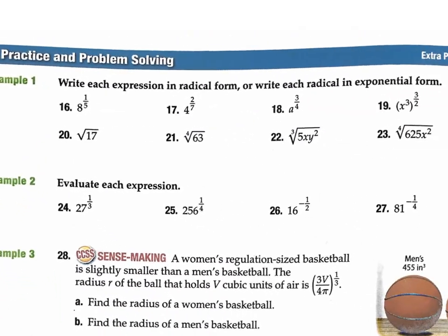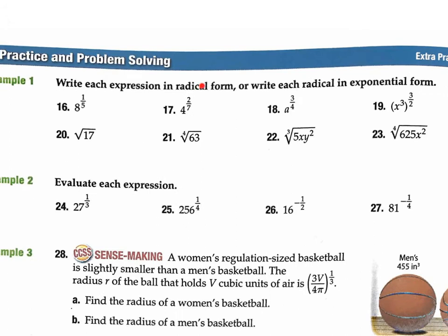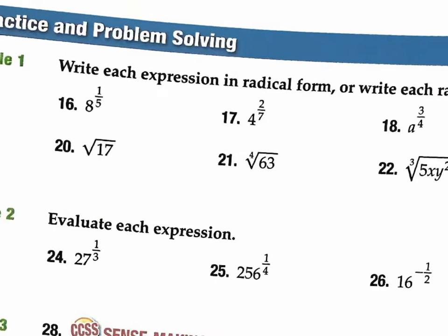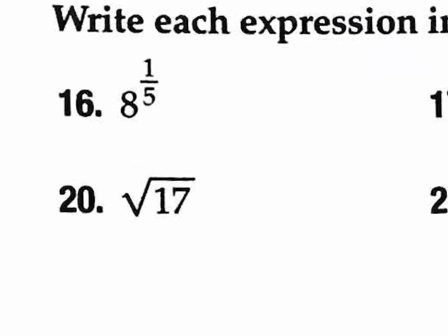This first part is simply writing your expression from radical form to exponential form, or vice versa — exponential form to radical form. For this one, the top number of the fractional exponent is always the power, and the bottom number is always the root. So 8 to the 1/5 becomes the fifth root of 8 to the 1st power — but 8 to the 1 is unnecessary, so just leave it as the fifth root of 8. That's the answer for number 16.